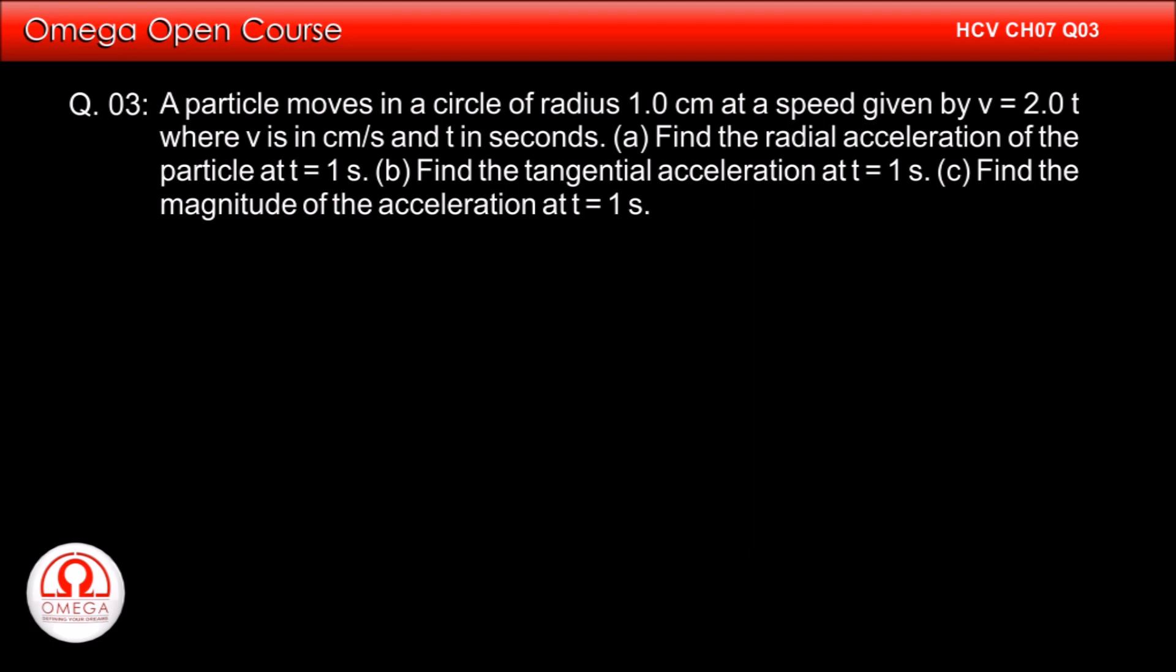A particle moves in a circle of radius 1 cm at speed given by v equals 2t, where v is in cm per second and t in seconds. Part a: Find the radial acceleration of the particle at t equals 1 second.